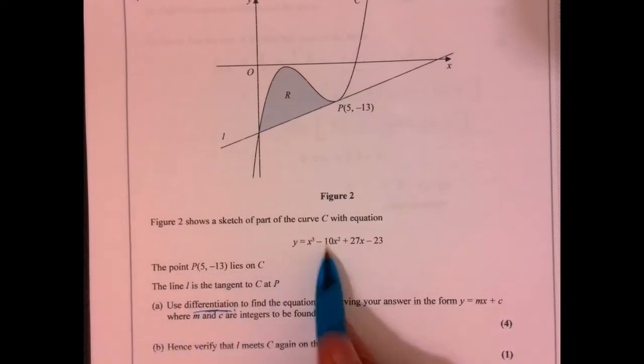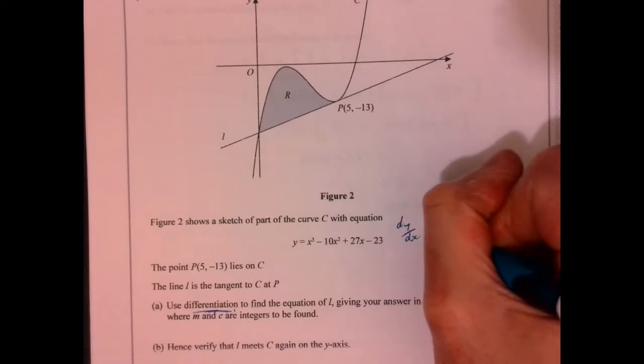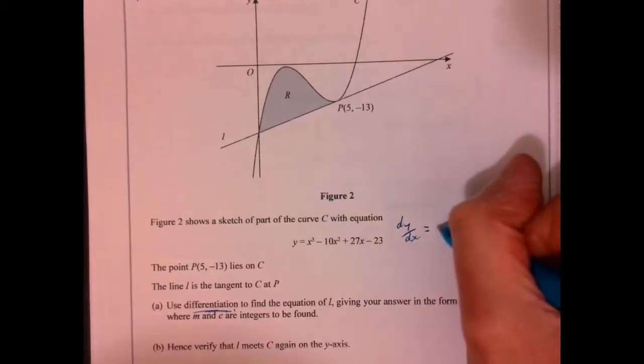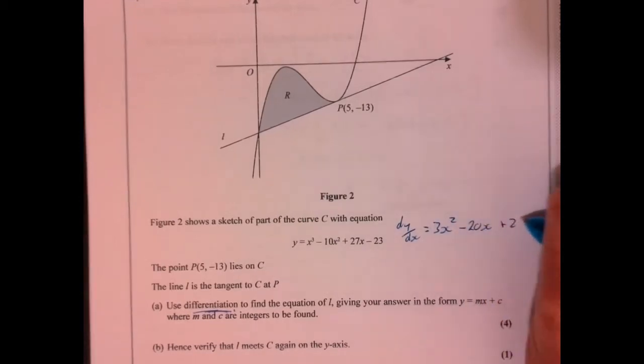So let's differentiate this. We've got dy/dx and it's going to equal 3x squared minus 20x plus 27.